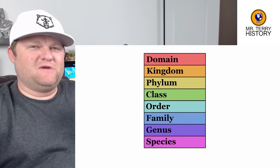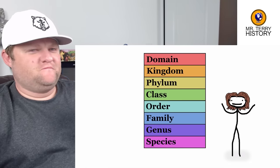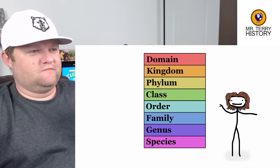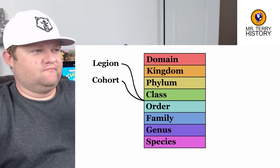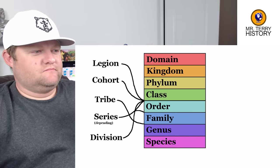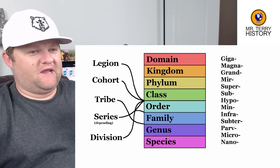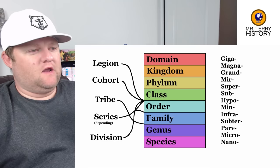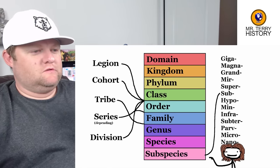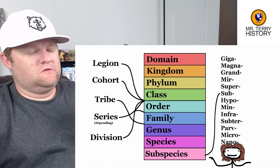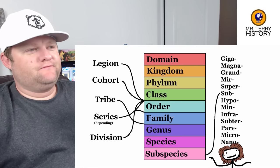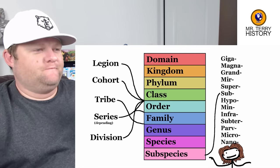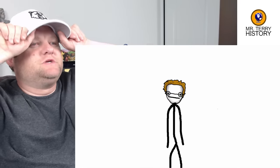Besides species at the lowest level, eight tiers isn't even enough for scientists, so they just stick new sublevels in between: legions, cohorts, tribes, series, divisions. And if you want to keep going, you can throw all kinds of prefixes on any of these for even more layers. There's even subspecies, which the more pedantic of you may think undermines the single somewhat agreed-upon definition in the whole tree. To that, my friends, taxonomists say... well, it's pretty complex, but the actual names themselves are easy to wrap your head around.